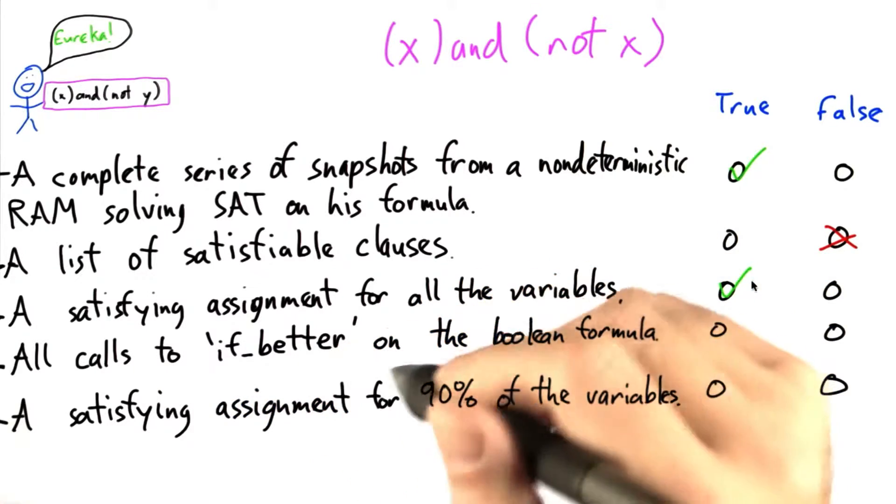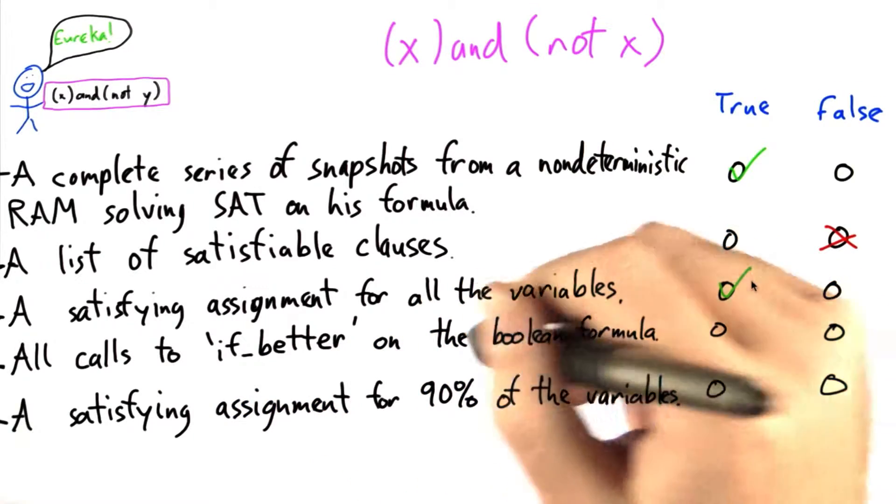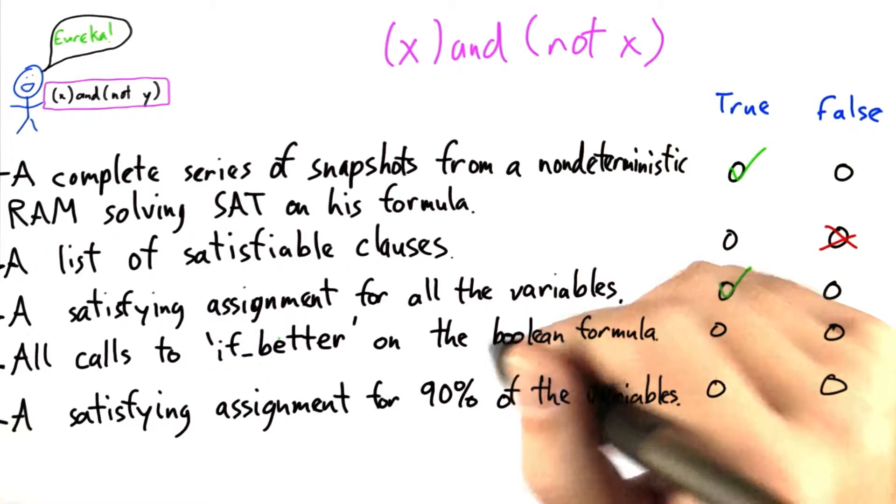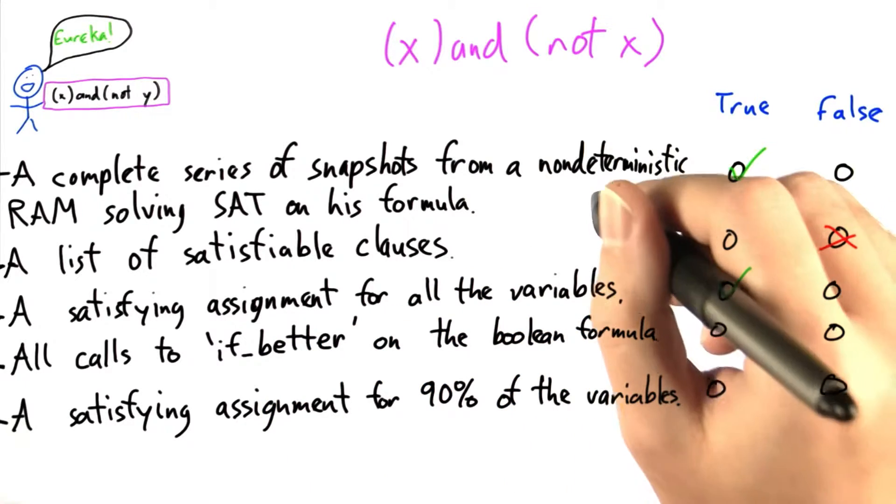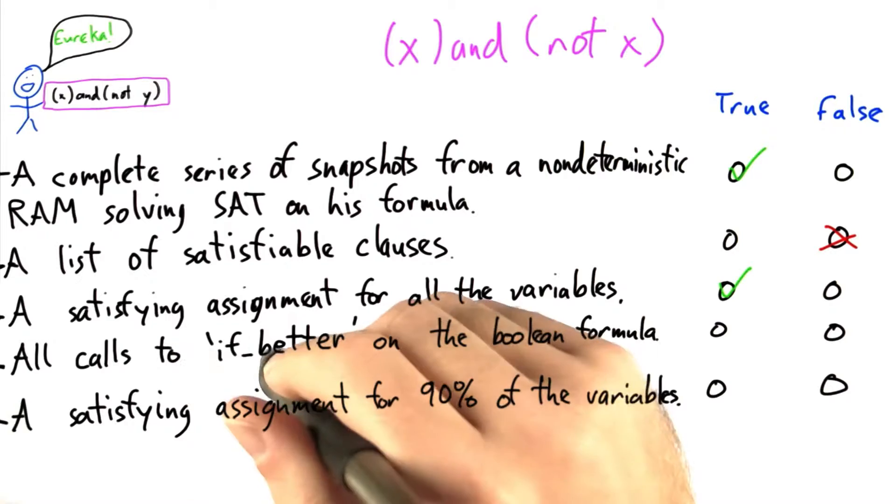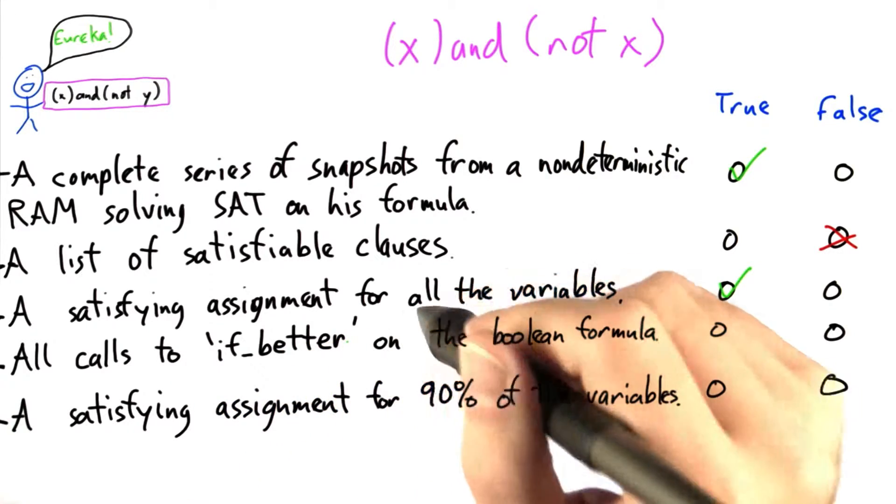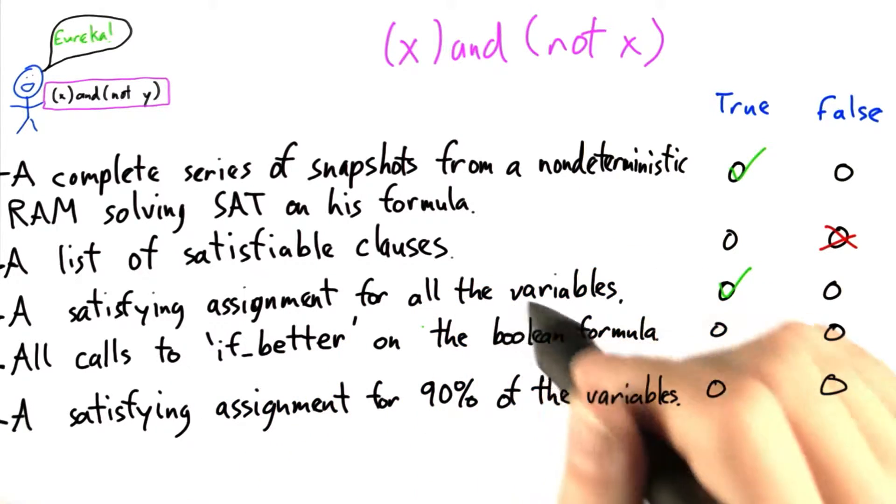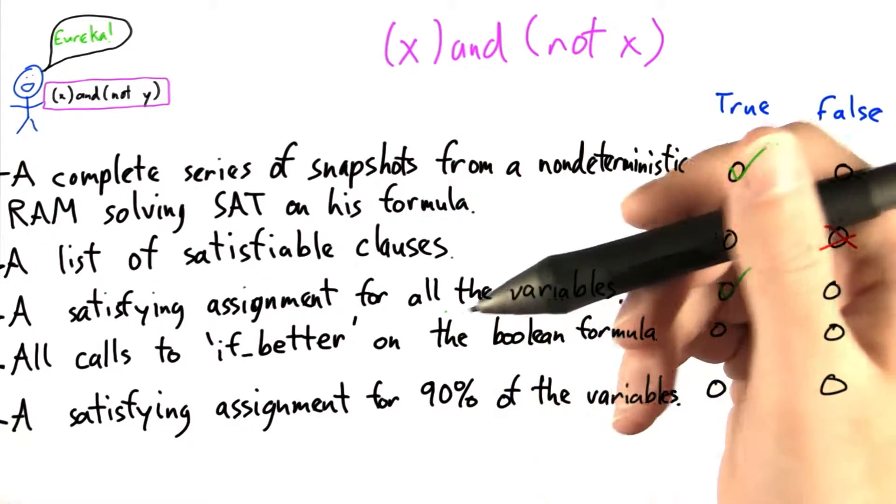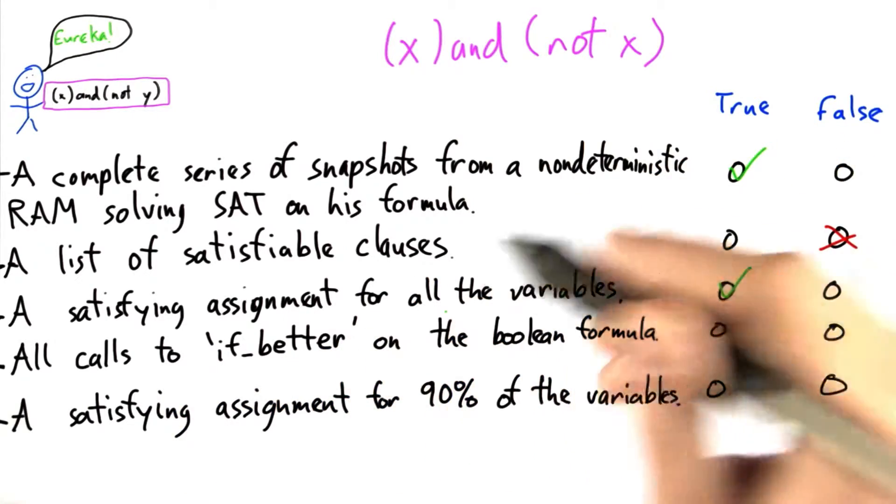Similarly, if we had all calls to if_better on the Boolean formula, well, if_better is the only difference between a non-deterministic and a deterministic RAM. So if we had all the calls to if_better, we wouldn't actually have to simulate if_better. We would know what the algorithm did at each step of the process.